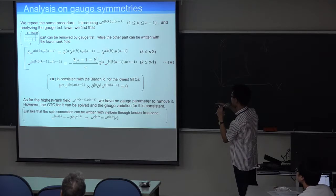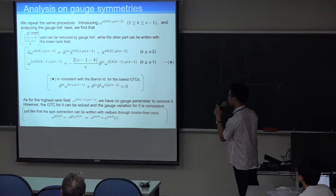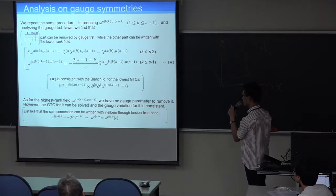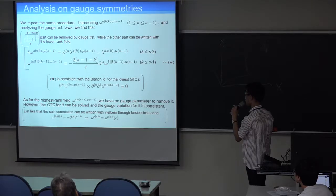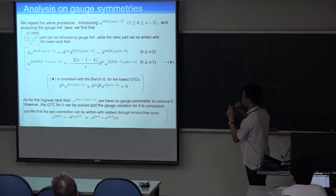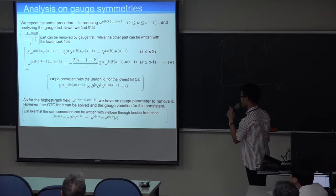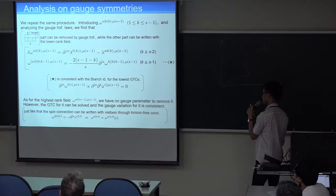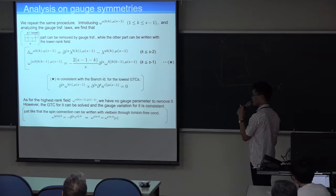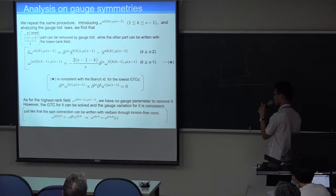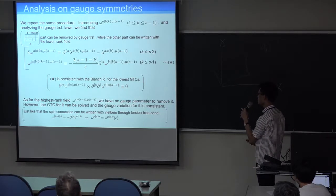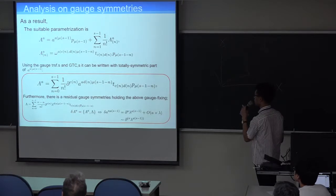And as a result, we conclude that the two row type parts of each auxiliary field can be removed by gauge transformation. While the other part can be written in the lower rank field, imposing the generalized torsion-free condition. The first line of recursion is the gauge transformation of two row type parts. And the second line is the generalized torsion-free condition. As for the highest rank field in two row of S-1 boxes, we have no gauge parameter to remove it. However, the generalized torsion-free condition for it can be solved explicitly. And the gauge variation for it is consistent. This is just like that the spin connection can be written with the vierbein through the torsion-free condition.